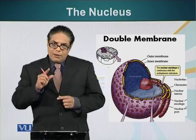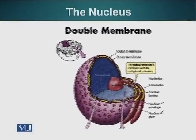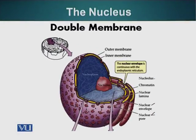The place where ribosomes are assembled is called the nucleolus. Here you can see these little pores in the nucleus. Another important feature of the nuclear membrane is that it is also continuous with the membranes of the cell — those are the endoplasmic reticulum. The nuclear membrane is continuous with these membranes.